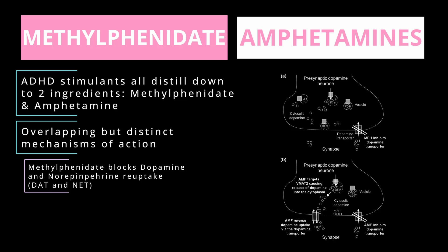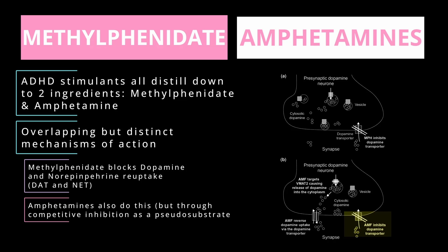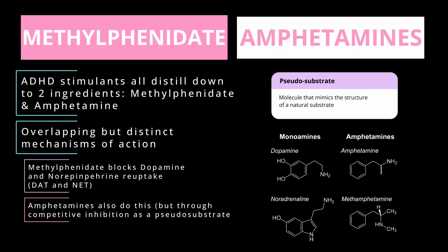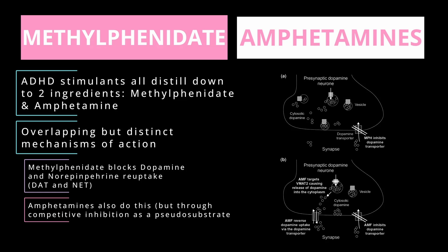Amphetamines also block the reuptake of dopamine and norepinephrine through DAT and NET, but they have an additional mechanism on top of this. Amphetamines are what we call pseudosubstrates — a molecule that mimics the structure of a natural substrate. It's not surprising that when we look at the chemical structures of amphetamines, they're incredibly similar to dopamine and norepinephrine. At high doses, as a pseudosubstrate, amphetamine gets taken into the neuron, where in the presynaptic neuron it targets the vesicles that contain the neurotransmitters — and more specifically, it targets VMAT2, which stands for vesicular monoamine transporter 2.